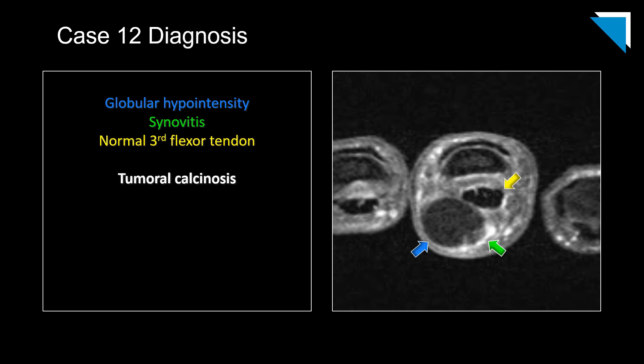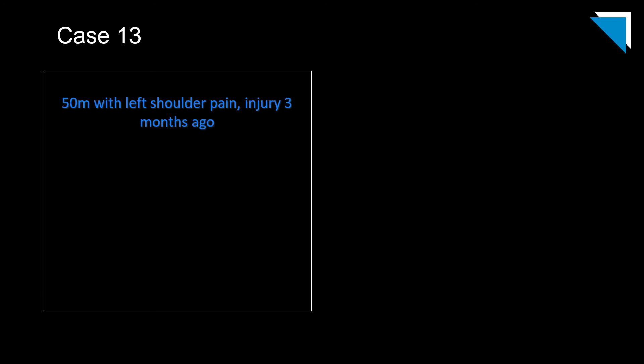The diagnosis here is tumoral calcinosis, a rare hereditary disorder resulting in periarticular soft tissue calcifications throughout the body. It is much more frequently seen in larger joints like the hip, shoulder, and elbow, but here we have a nice case of it in the middle finger.